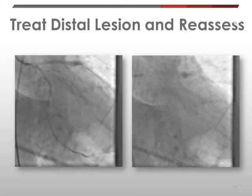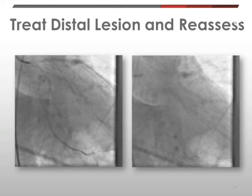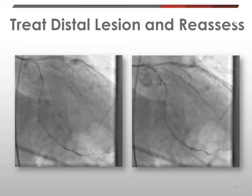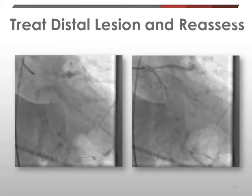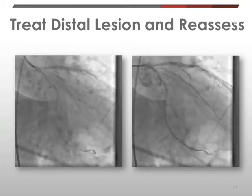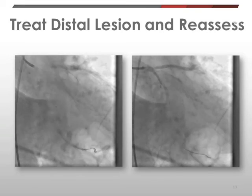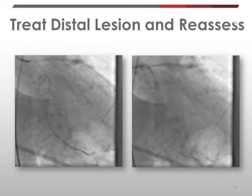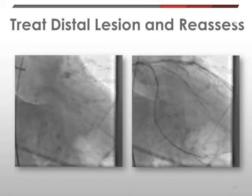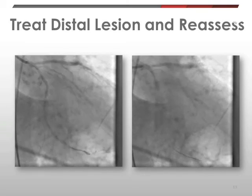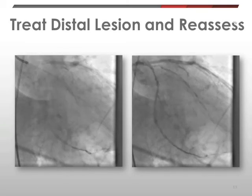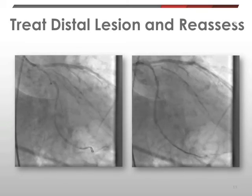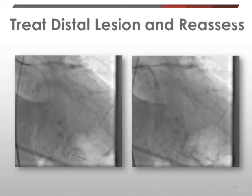From these baseline measurements using both IFR and FFR, it was quite clear that the biggest incremental step-down in pressure gradient was from lesion B, the second lesion. This is what led us to our decision making, and we went ahead to implant a stent in lesion B.